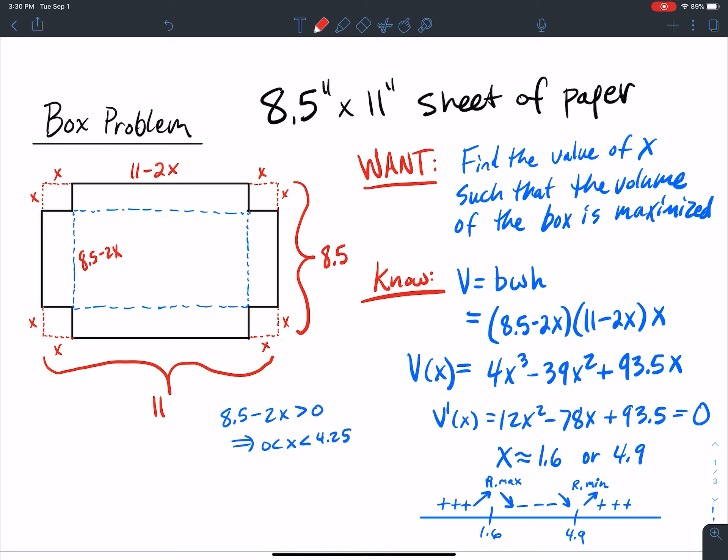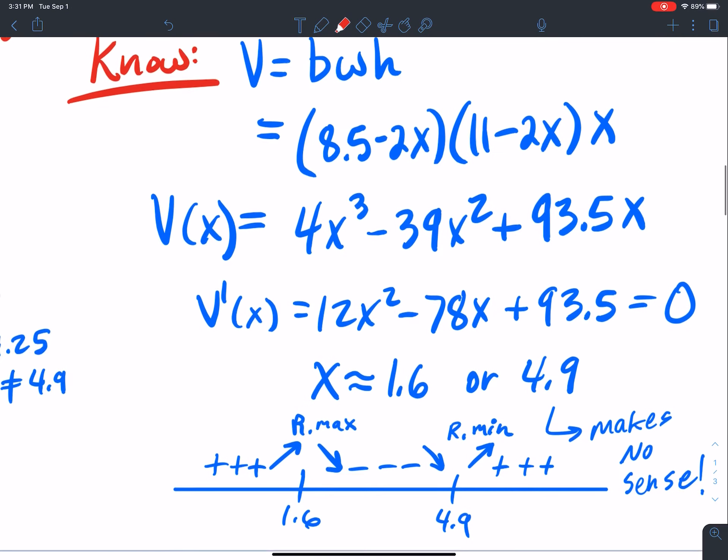If I solve this inequality here for x, I get x is in the realm from zero, got to be something greater than zero but less than 4.25. So it's actually impossible to have an x value that's bigger than 4.25. If you had an x value bigger than 4.25, then it would actually extend out more than half the distance right there. If you extend out more than half this way and more than half this way, then you're talking about a negative distance. So this tells me that 4.9 can't even be a real solution. It doesn't even make sense.